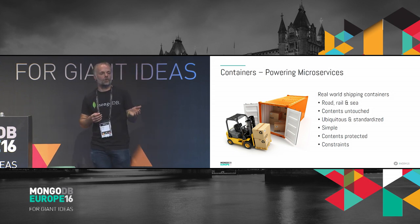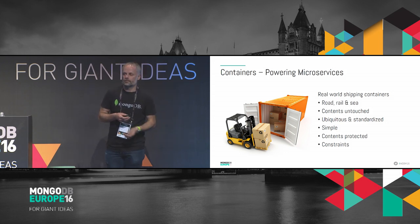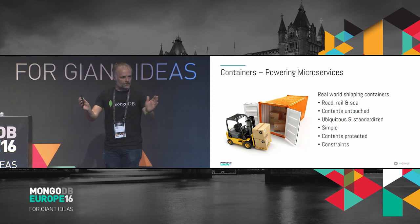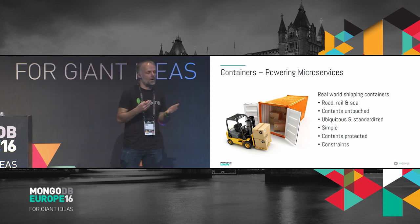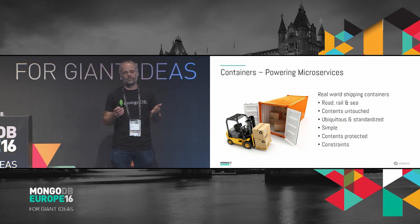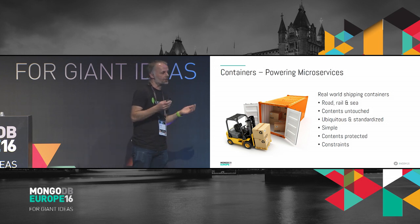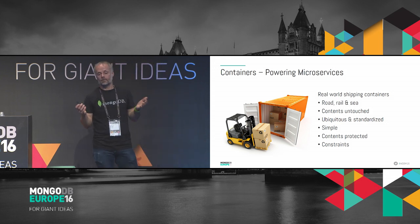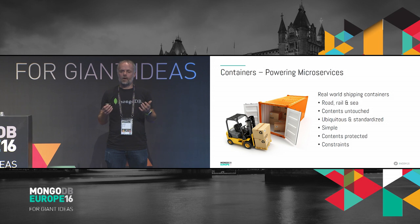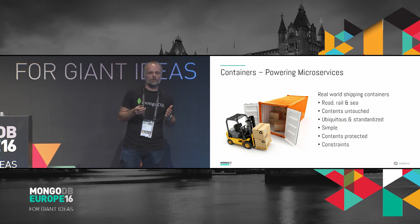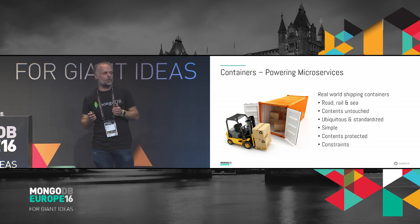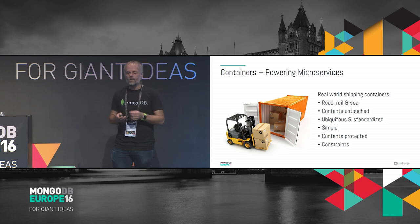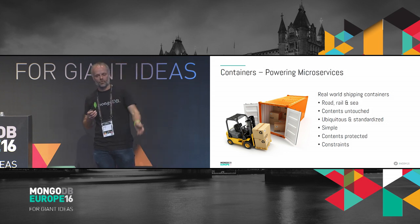Shipping containers are standardized — you can get them anywhere in the world and they'll be the same shape with the same capacity. Couldn't be simpler to use: open the doors, put stuff in, close the doors. The contents are isolated and protected — you could have a container of Pepsi next to one full of Mentos and there's no reaction between the two. And finally, constraints: you can use them very efficiently because you know the exact dimensions, so you can efficiently fill the space and know exactly what resource you'll need.